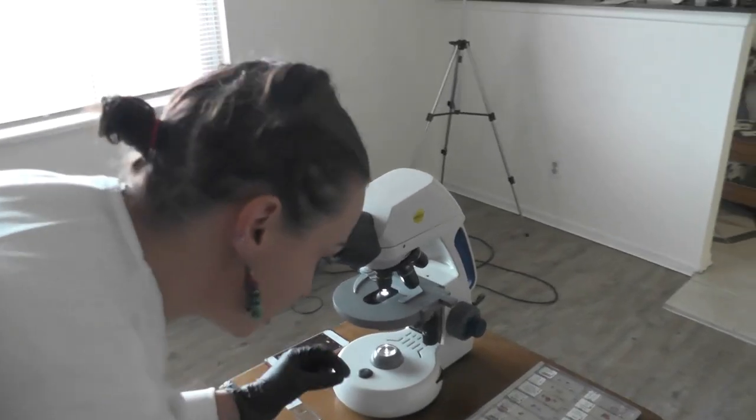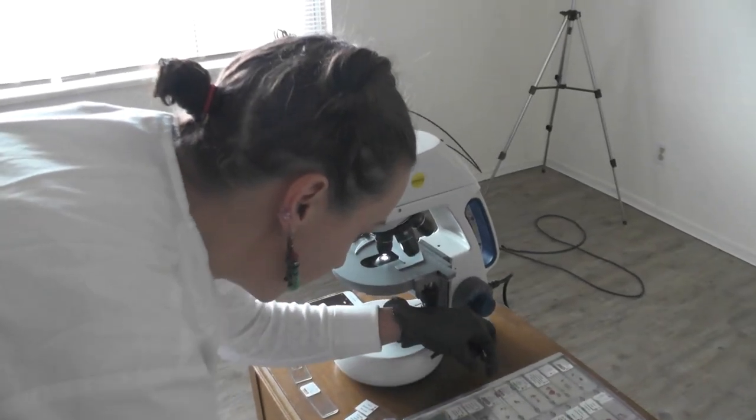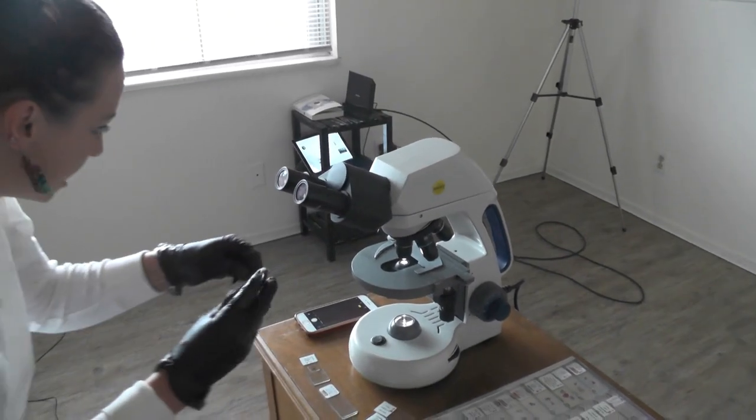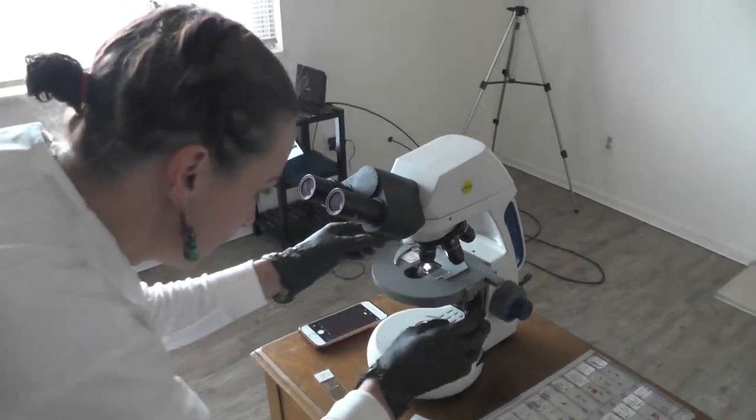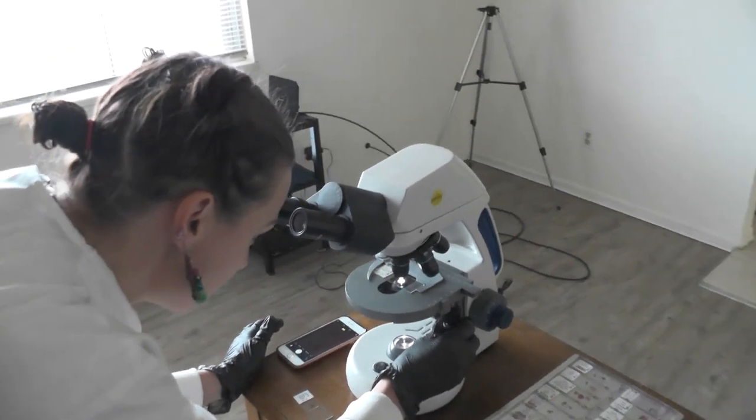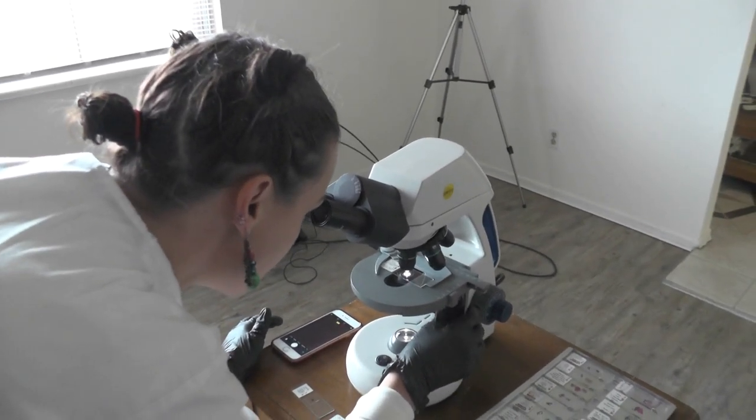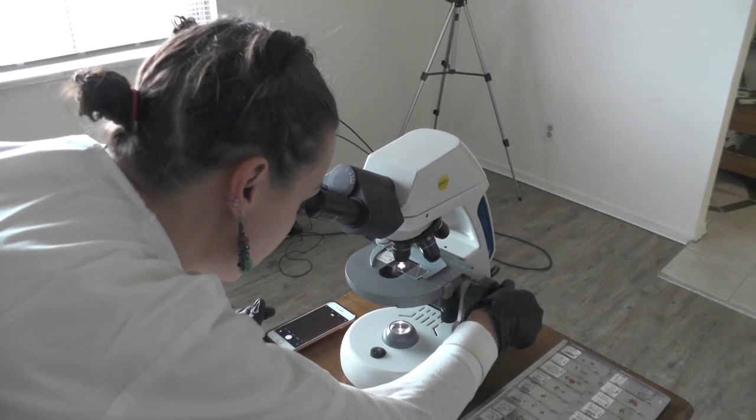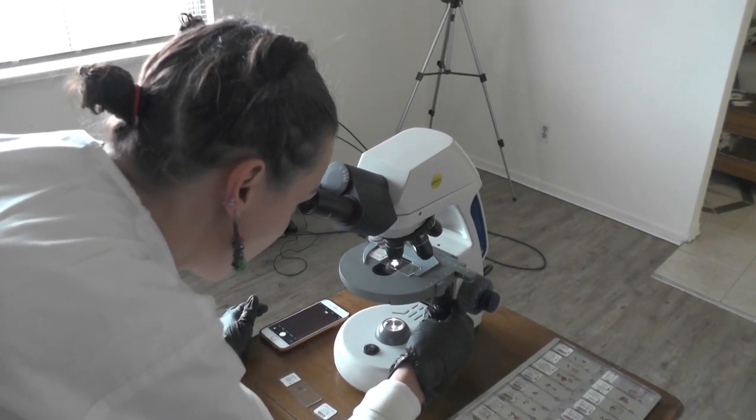Now the large intestine is going to be easiest to recognize because it's got a high proportion of goblet cells in the epithelium and that's because our goblet cells secrete mucus and we need to be able to lubricate the solid waste that's being formed.